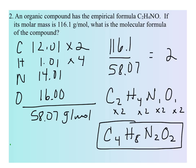You can always go back and double-check this molecular formula — find the molar mass for the molecular formula and see how it compares to the 116.1 grams per mole given in the problem. It may be a little bit off due to sig figs, but it should be pretty close to 116.1 grams per mole.